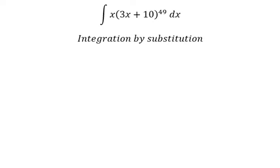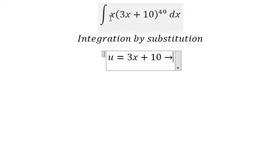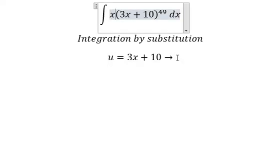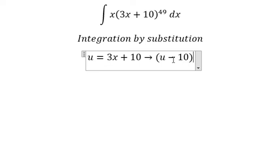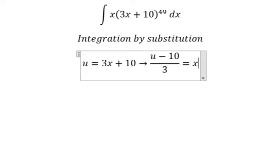I will put u equals to 3x plus 10. We put 10 to the left and then divide both sides by 3 because we have x in here. So we got u minus 10 over 3 equals to x.